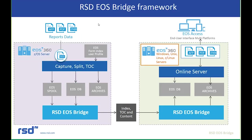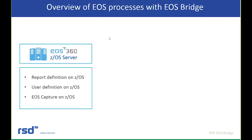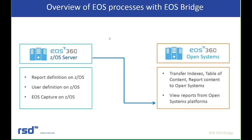On the open systems side, report definitions do not have to change — they still remain on the mainframe. User definitions don't have to change either. We still capture the reports on the mainframe, then move that data over to an open systems application — Linux, Unix, or Windows. We transfer all the indexes, table of contents, and report content to the open systems side, which allows end users to view reports from an open systems platform. This completely eliminates the MIPS access from mainframe usage for report viewing.